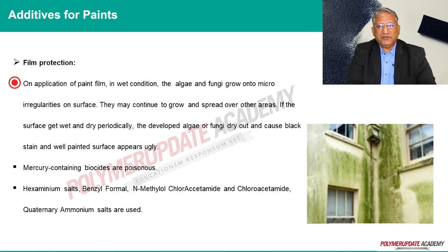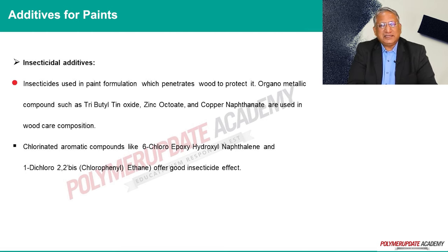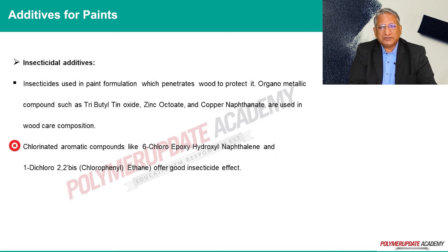On application of paint film in wet conditions, algae and fungi grow onto micro-irregularities of the surface. They may continue to grow and spread over other areas if the surface gets wet and dry periodically. The developed algae or fungi dry out and cause black stains on the painted surface, making it appear ugly. Insecticidal additives: insecticides used in paint formulations penetrate wood to protect it. Organic metallic compounds such as tributyl tin oxide, zinc octenate, and copper naphthenate are used in wood care compositions. Chlorinated aromatic compounds like chlorinated hydroxy naphthalene and dichlorodiphenyl trichloroethane offer good insecticide effect.